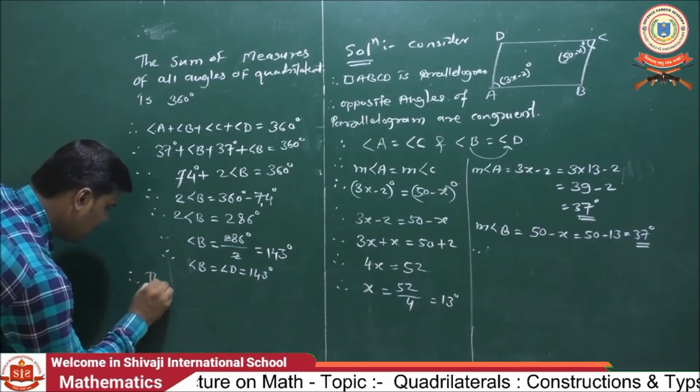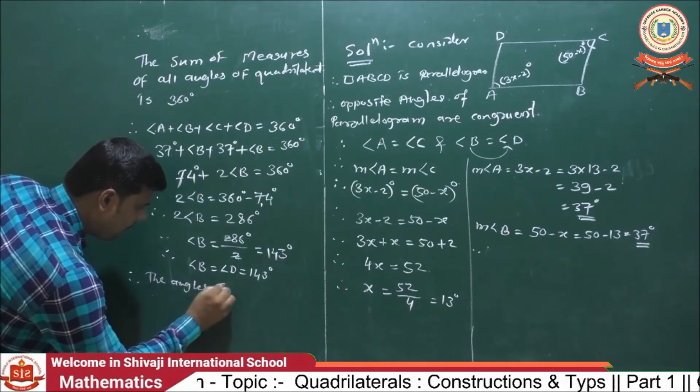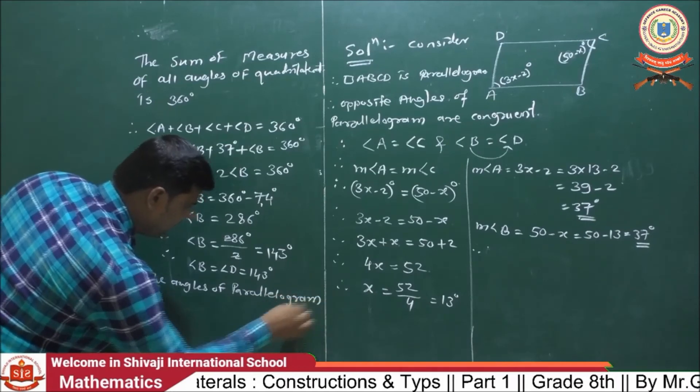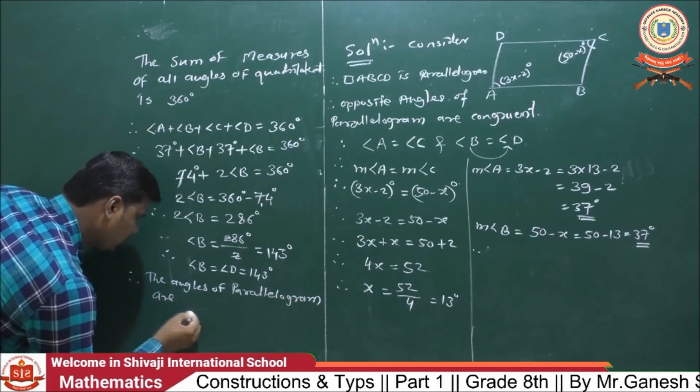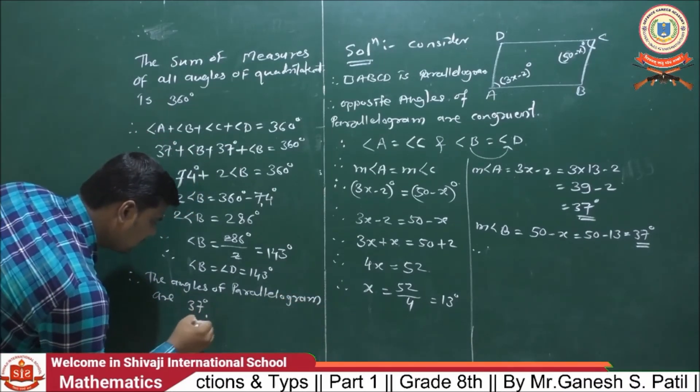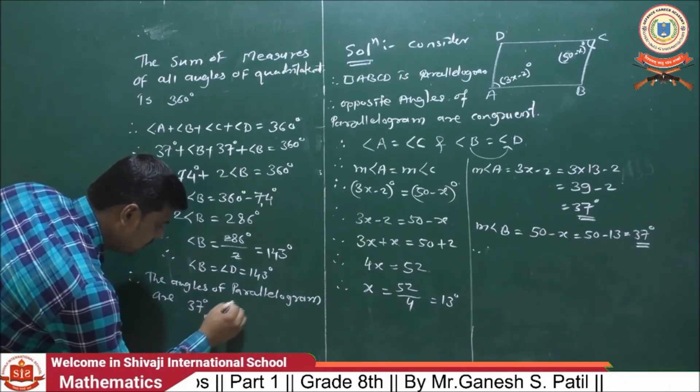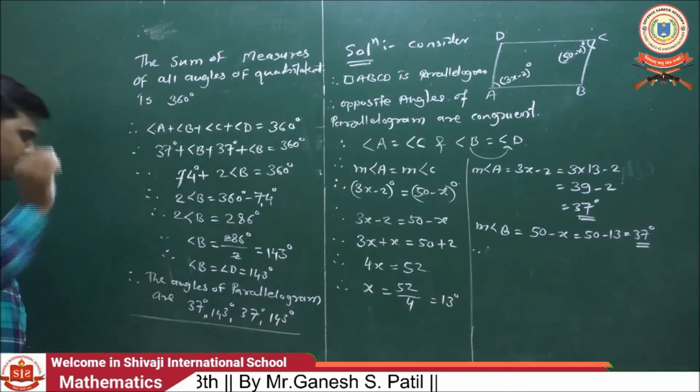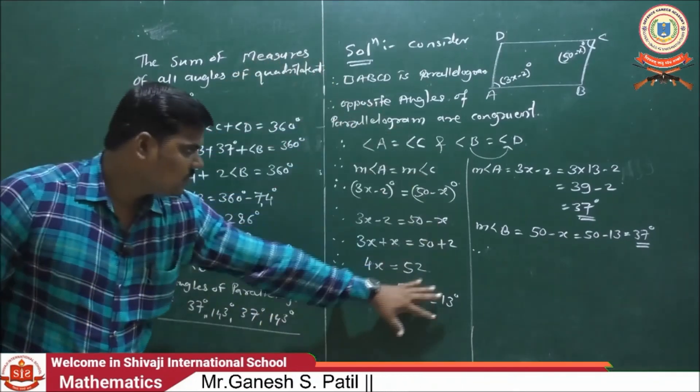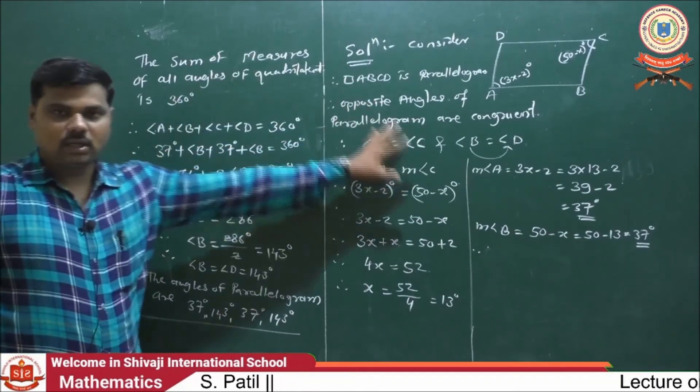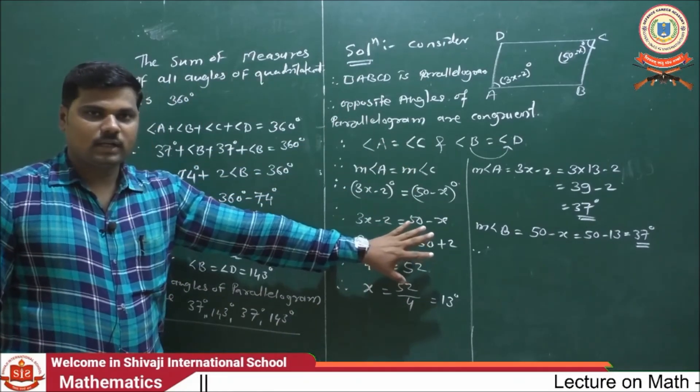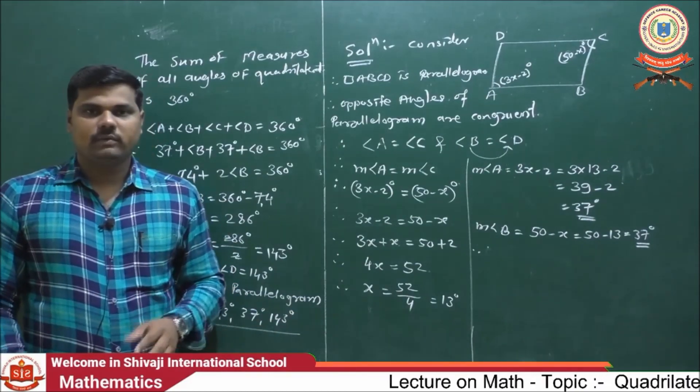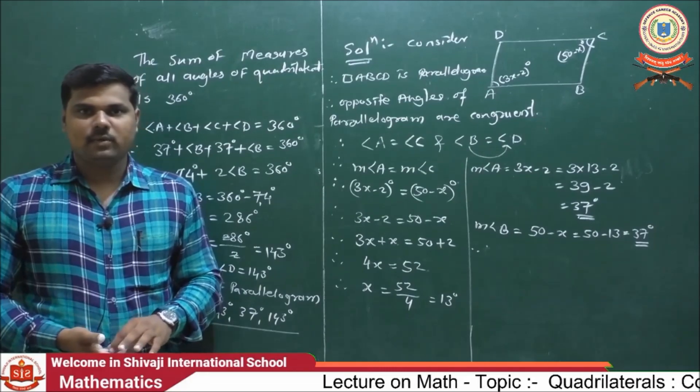The angles of parallelogram are 37, 143, 37, 143. See, this method is very easy. And I hope that now you understand this one. Dear students, the next examples we will see in the next lecture. Thank you very much. Take care.